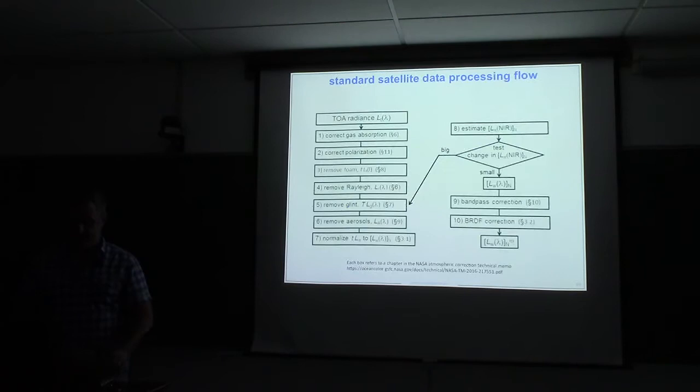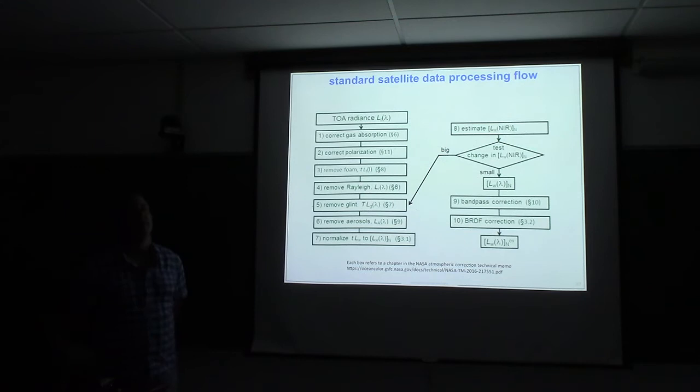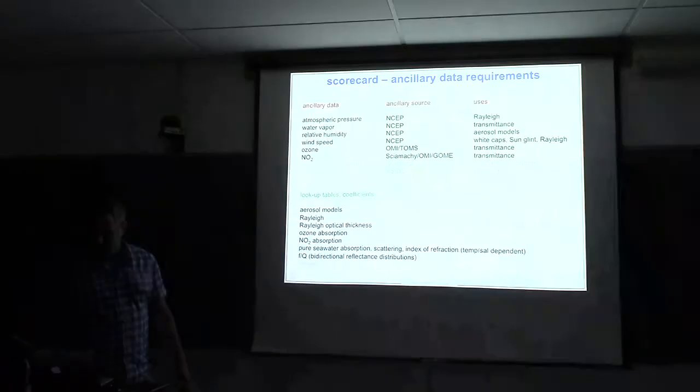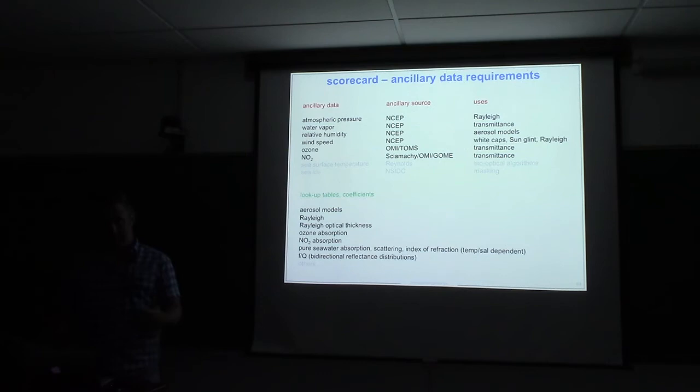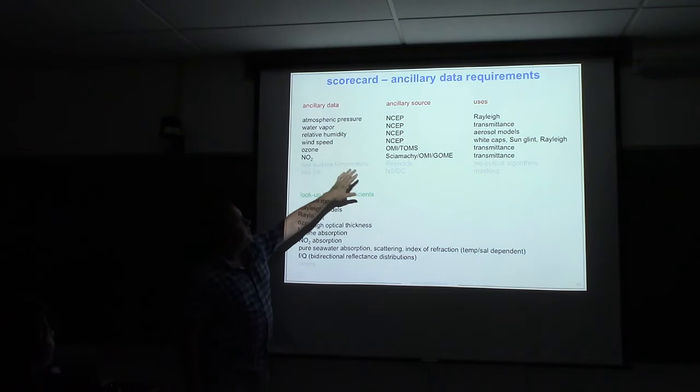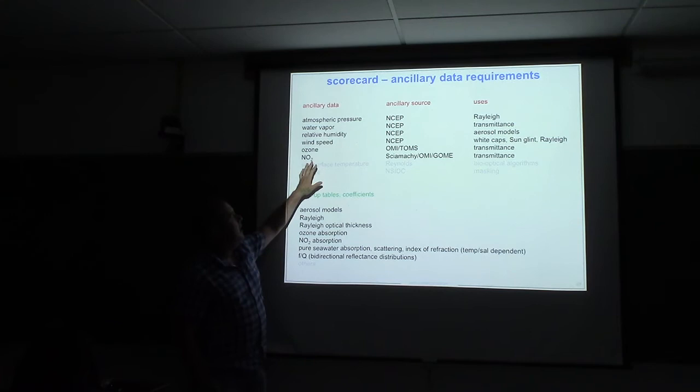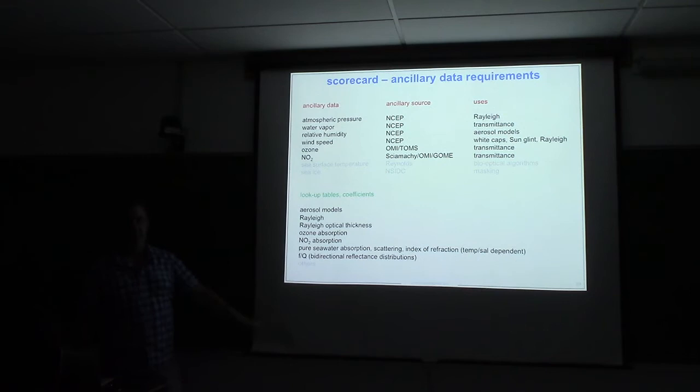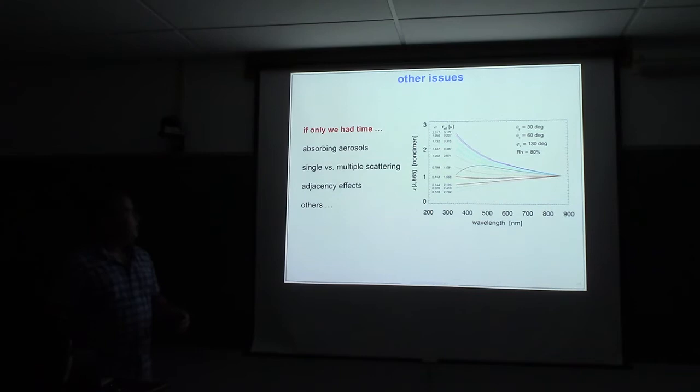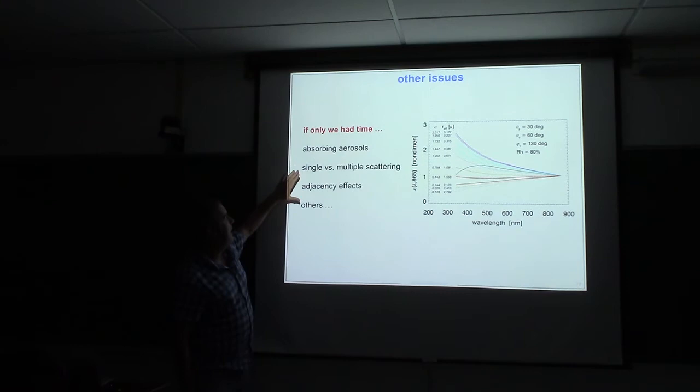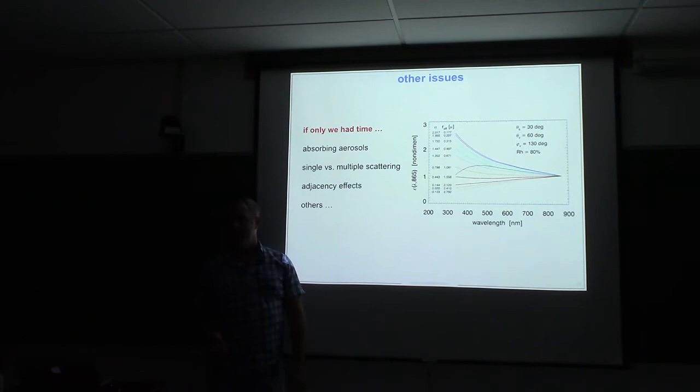So this is everything we covered. This is the satellite data flow. It's there for your reference. It's a figure from the technical memorandum as well. This is a scorecard for ancillary data. So if you see something you don't like, there are places to help here. But a list of the sources, list of the uses, list of all the different data products that we get on global scales. But then there are also lookup tables and coefficients. This is not exhaustive, but there's a lot that goes into this. I don't think we want to hear me talk anymore today, so we won't go into single multiple scattering, adjacency effects, other things. But I do like this plot as an example of why absorbing aerosols are a real pain in all of our asses.